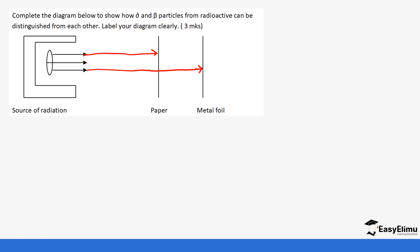That brings us to the end of the three types of radiations that occur. The next thing we are going to look at is radioactive equations that occur when substances disintegrate or decay to release radiation. See you in the next lesson as we focus on this.